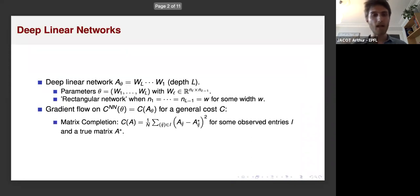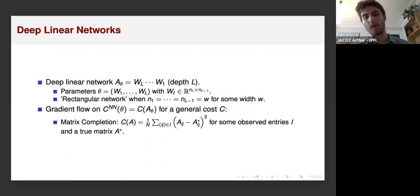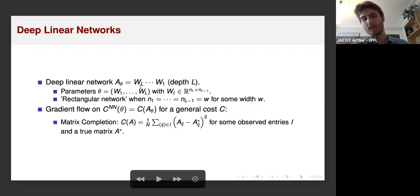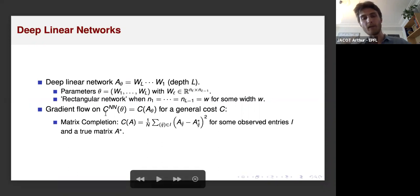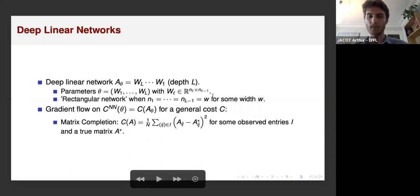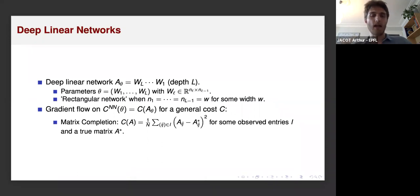Let's define deep linear networks. A deep linear network is the idea of representing a matrix as the multiplication of multiple matrices. We have L matrices and we call L the depth. We define the parameters as the concatenation of all of the parameters of these matrices. I will focus in particular on what are called rectangular networks, where the number of neurons in all of the hidden layers is equal to some constant W — this is just for simplicity and is not particularly important in the analysis.